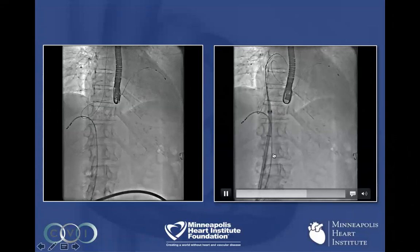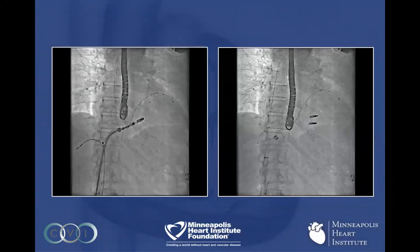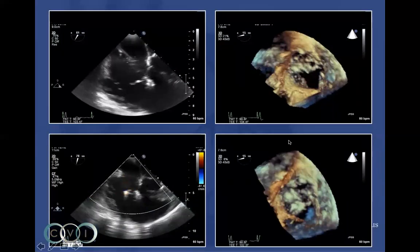Here's the MitraClip device being advanced up from the groin over a Safari stiff wire, and we're going to use this to place a couple of clips. You can see this snare, which is holding the lead in the liver, and the MitraClip being used off-label has been advanced into the right ventricle. We then advance one and then two clips — here's the first clip, here's the second clip. This is a steerable guide catheter used to deliver the clips. Here's that coronary sinus lead, which even after removal of the snare is still draped in the hepatic veins.